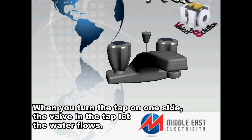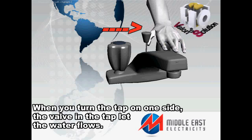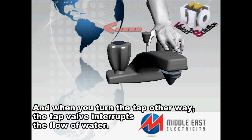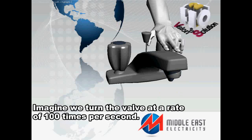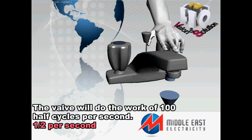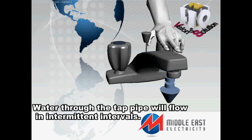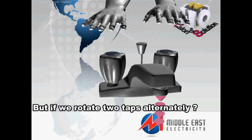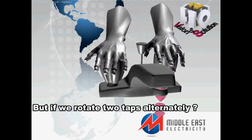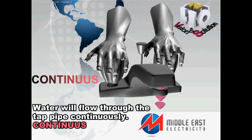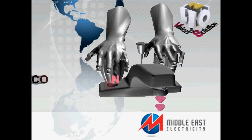Imagine the tap in the kitchen. When you turn the tap on one side, the valve in the tap lets the water flow, and when you turn the tap the other way, the tap valve interrupts the flow of water. Imagine that we turn the valve at a rate of 100 times per second. The valve will do the work of 100 half cycles per second. Water through the tap pipe will flow in intermittent intervals. But if we rotate two taps alternately, water will flow through the tap pipe continuously, in a constant flow.